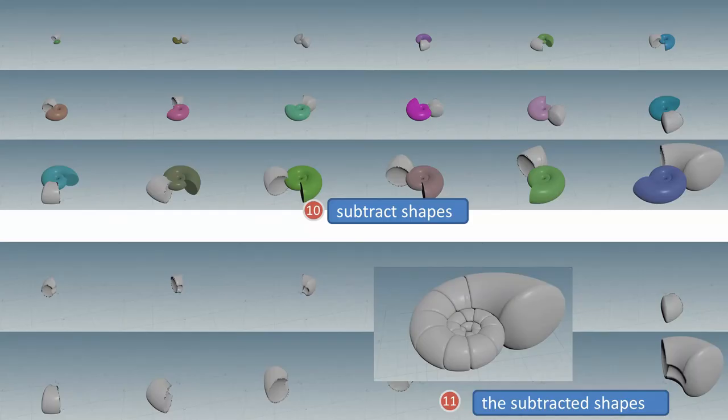This setup uses loops at many stages. In the previous slide, I showed one of the subtractions. Here, you can see that this is of course repeated for all the chamber parts. As a result, we get the subtracted shapes. Remember, this is still a SDF VDB volume.